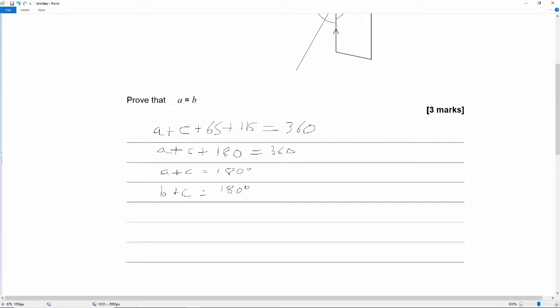So if A plus C is 180 degrees and B plus C is 180 degrees and C hasn't changed, then A must be the same as B. So A is equal to B, which is what we set out to prove.